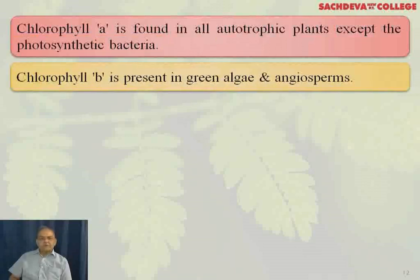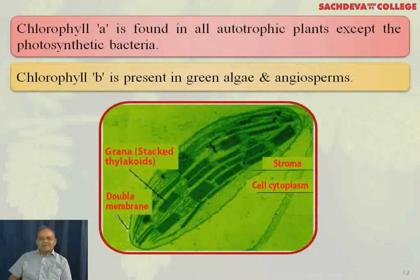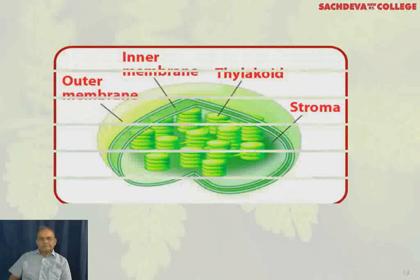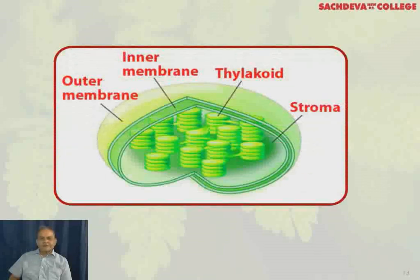Chlorophyll B is present in green algae and angiosperms. This is the electron microscope image of the chloroplast organelle. You can see the stroma, cytoplasm, grana thylakoids — it is a double membrane organelle. This is the section showing the inner membrane, outer membrane, thylakoids, and the stroma.